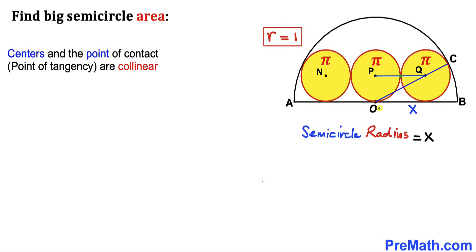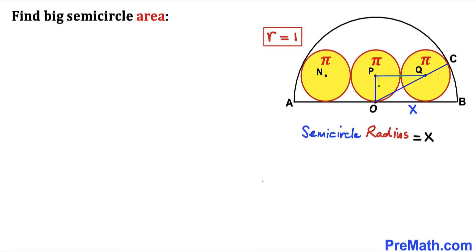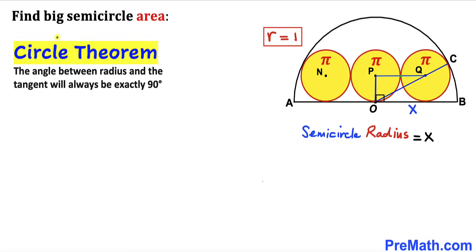I have connected center O with center Q and point of tangency C — these three points are collinear as well. I have also connected center P with center O, where OP is the radius of this circle. By the circle theorem, the angle between the radius and the tangent is always 90 degrees, so this angle is 90 degrees. Therefore triangle OPQ is a right triangle.